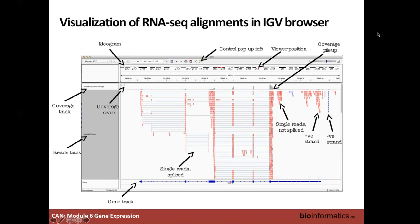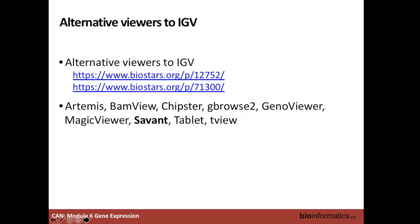You can load a BAM file from an RNA-seq alignment into IGV, which you may have already opened when looking at mutations. You can look at reads and see that some are spliced — reads mapping to one exon and then the other end mapping to the next exon across a splice junction. You can specify the strand in IGV options as well. Alternatives to IGV exist, including Seqmonk and others, but IGV is very common and useful.